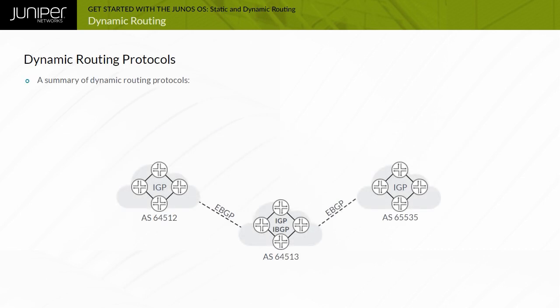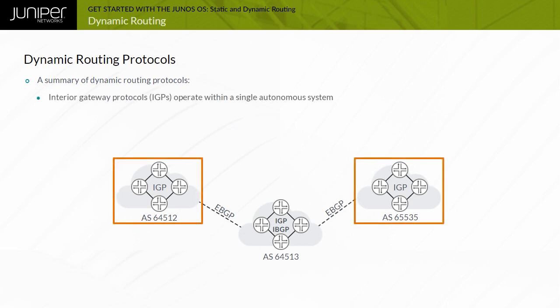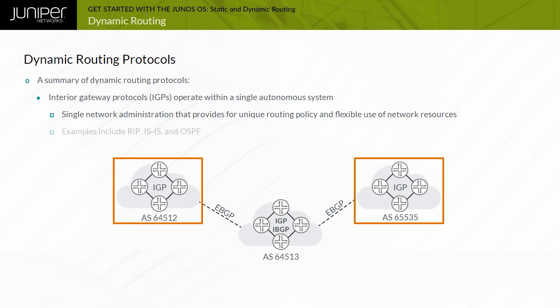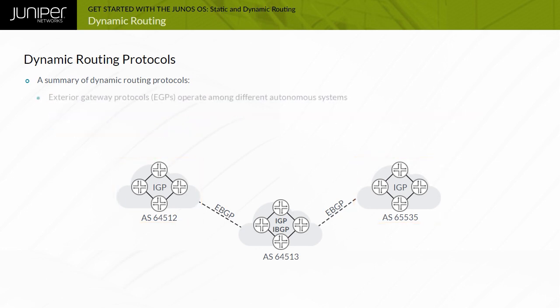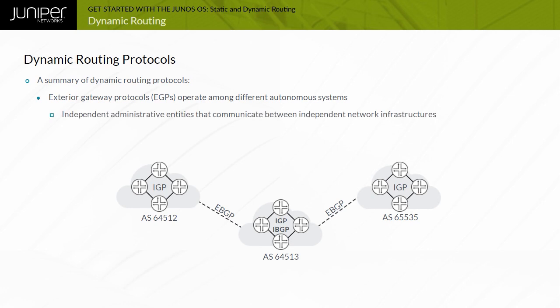Interior Gateway Protocols, or IGPs, operate within a single autonomous system with unique routing policy and flexible use of network resources. Examples of IGPs include RIP, IS-IS, and OSPF. Exterior Gateway Protocols, or EGPs, operate among different autonomous systems and are used by independent administrative entities to communicate between independent network infrastructures. The current EGP in use is BGP.